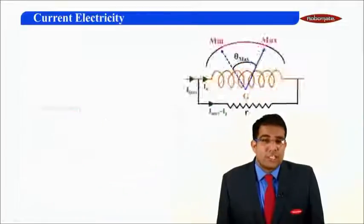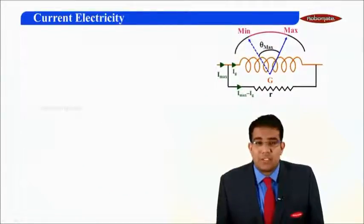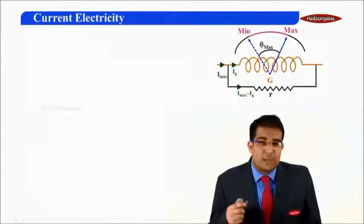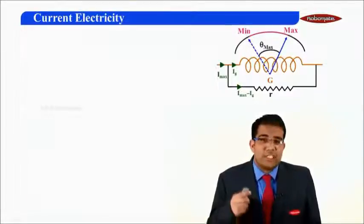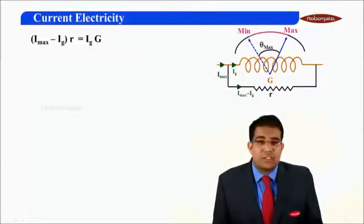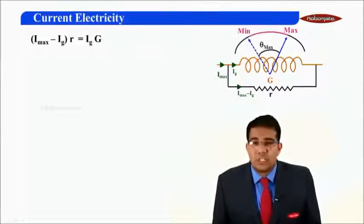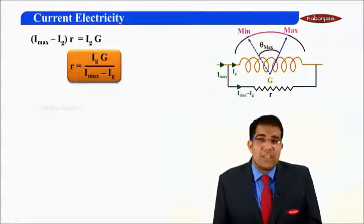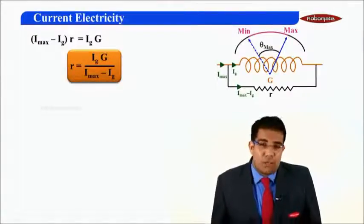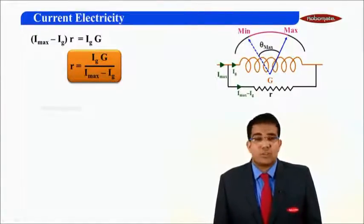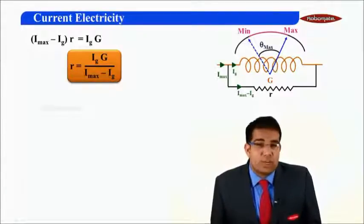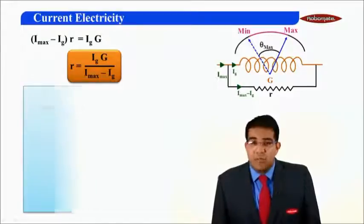For the mathematical analysis: Ig is the current going through G, and (Imax minus Ig) is the current going through the shunt resistance R. Since G and R are in parallel, their potential differences are equal. From this equation, the shunt resistance R equals Ig times G divided by (Imax minus Ig). This is a very important result in the working of the ammeter.